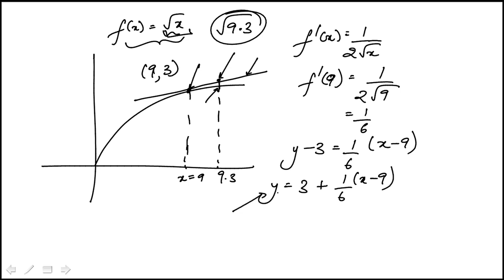Now I'm going to use the tangent line to approximate what square root of 9.3 is which is find the value on the tangent line when x is 9.3. So I replace x with 9.3. That's 0.3 divided by 6. That's 0.05. So the value I get is 3.05.